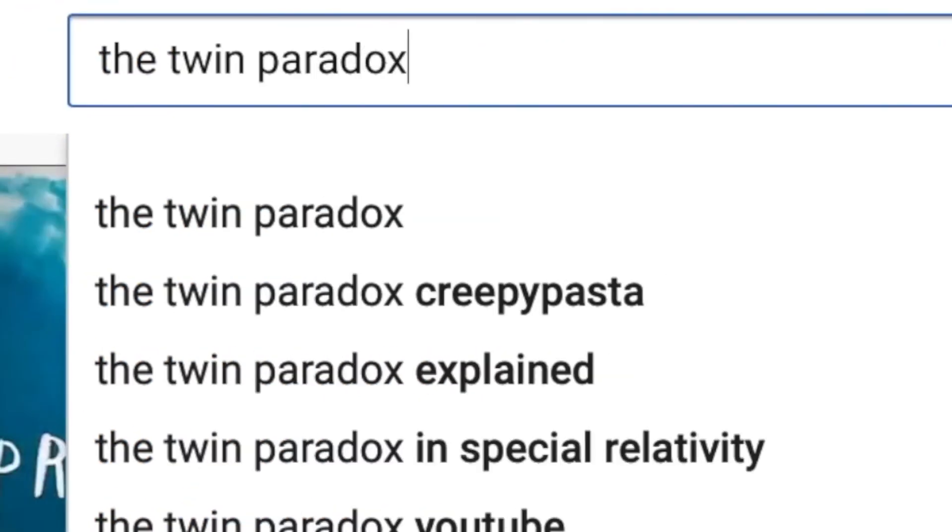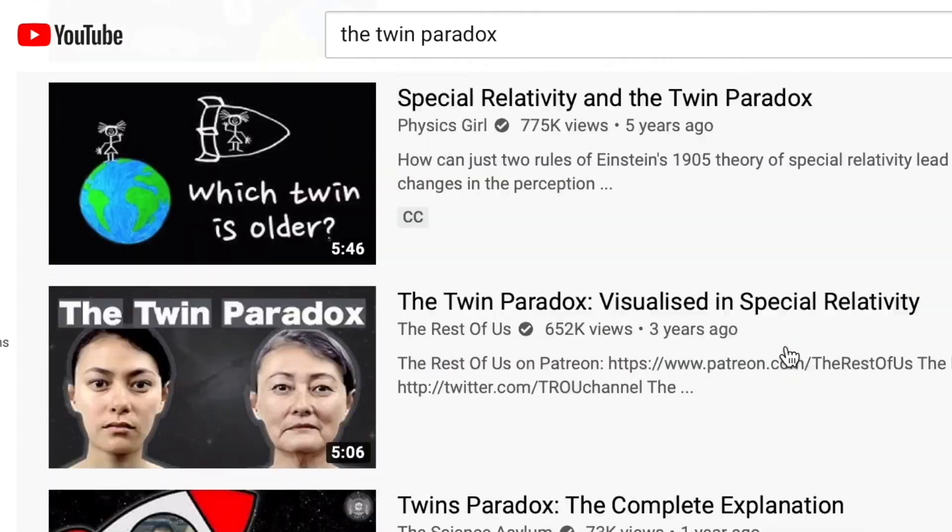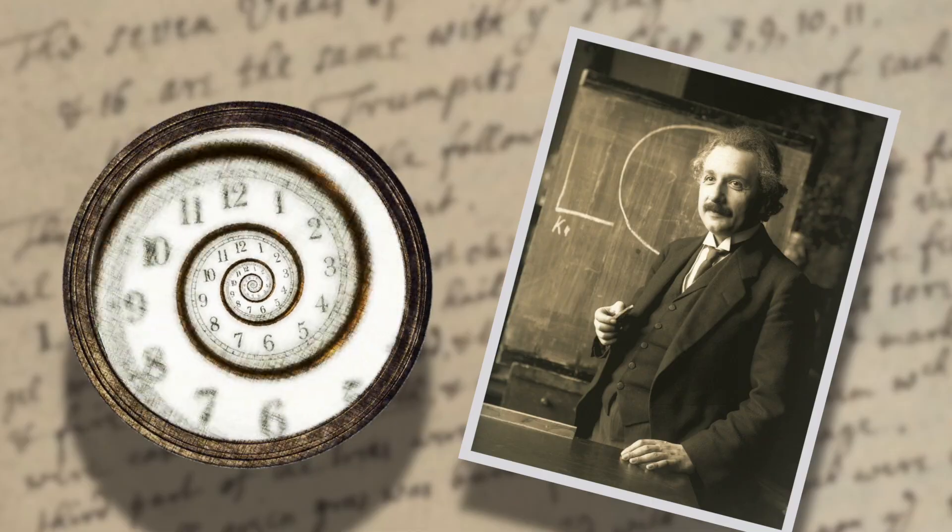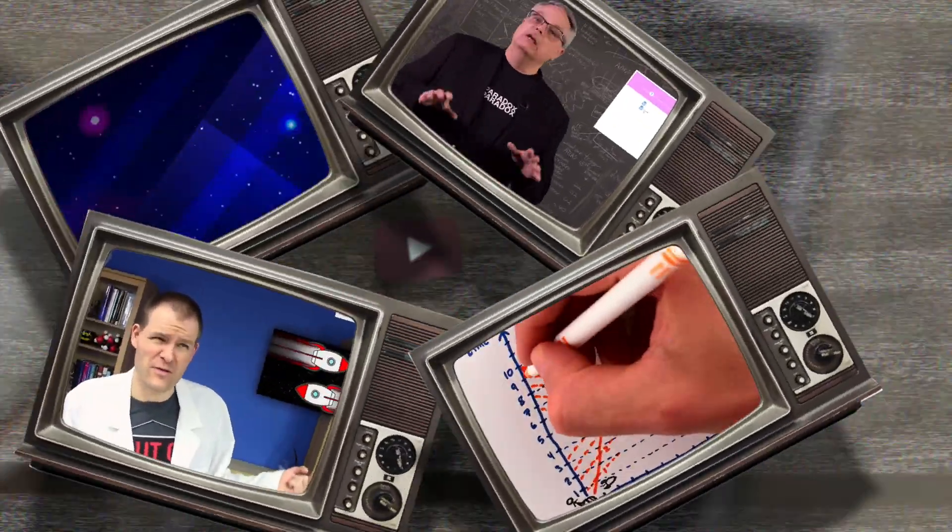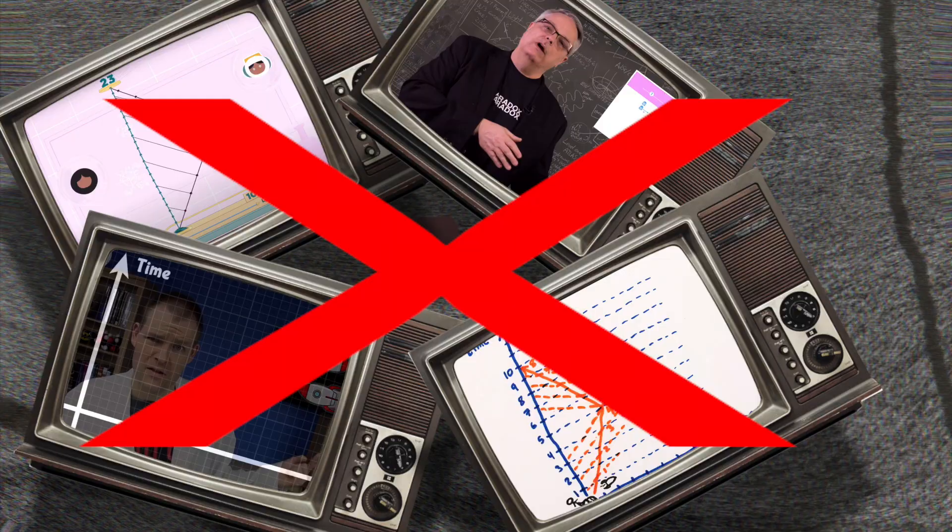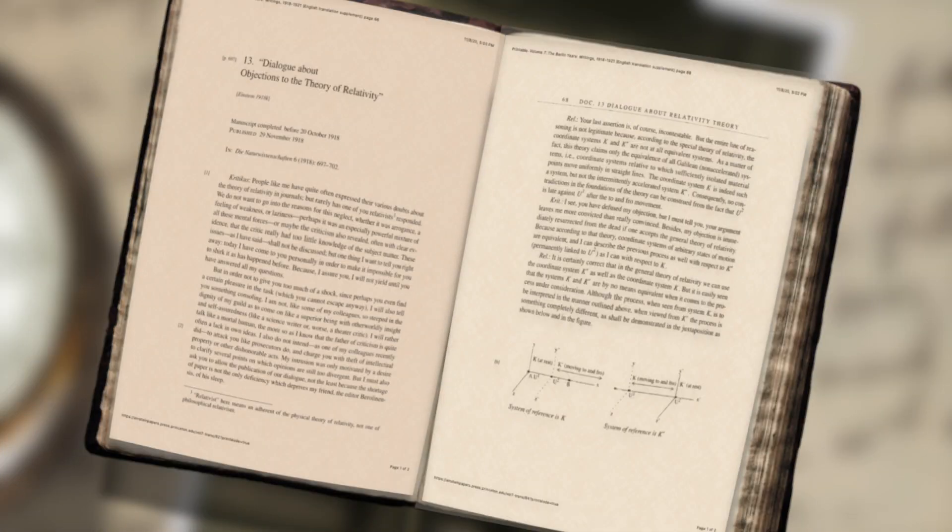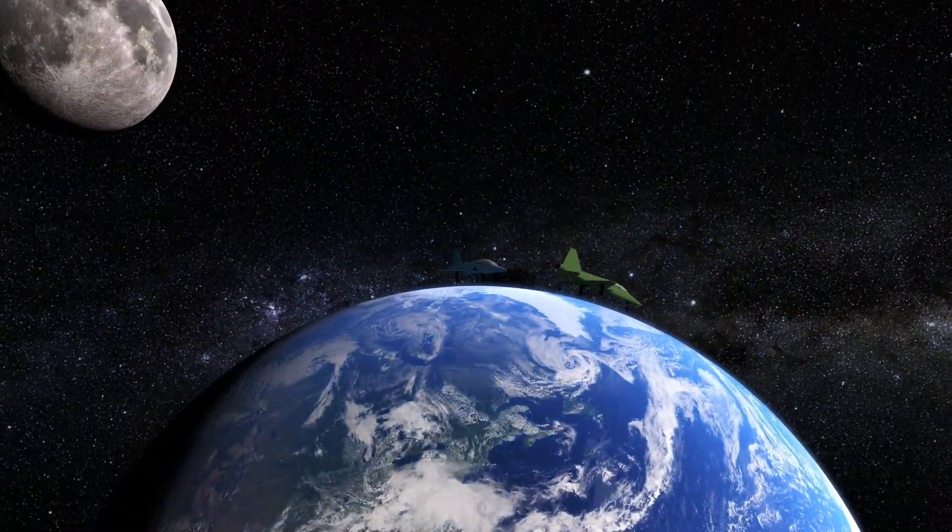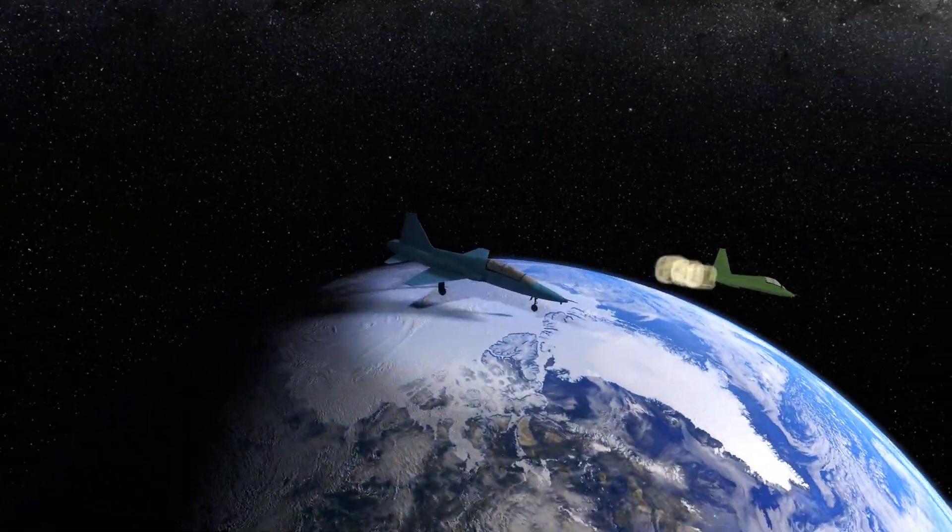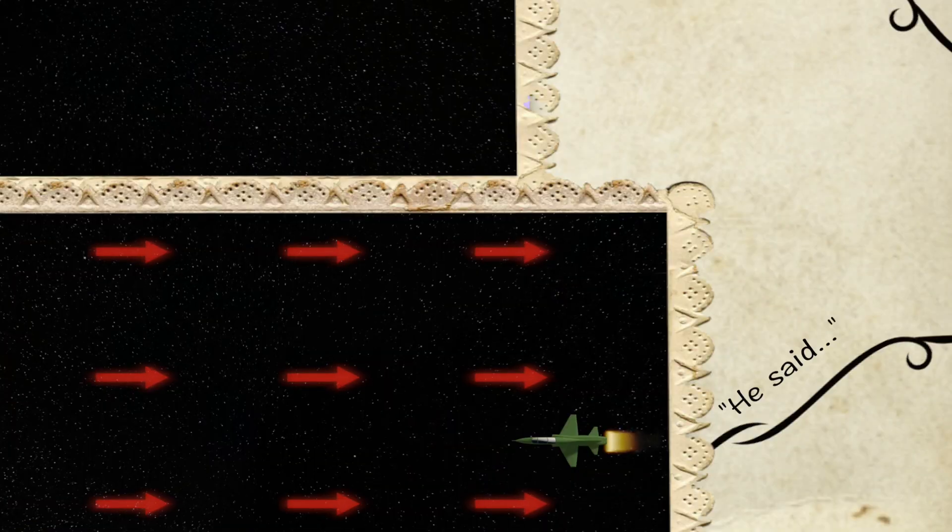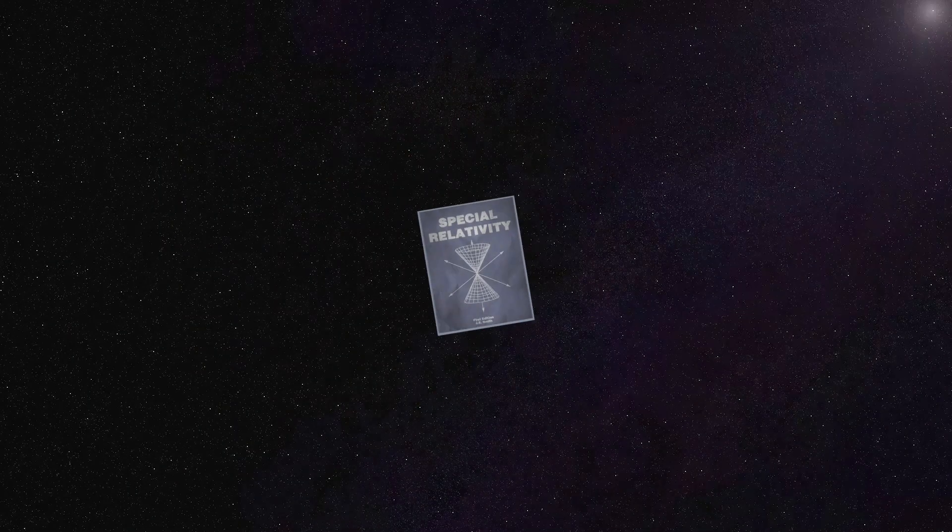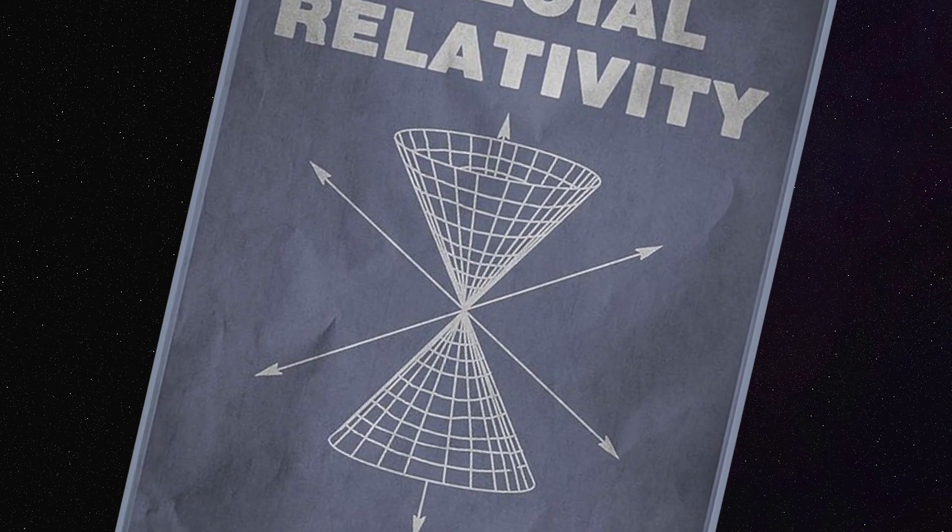Explanations to the twin paradox are as numerous as the various channels on YouTube which purport to have them. But what most people don't know is that in the eyes of the inventor of relativity himself, almost all of these explanations are insufficient. According to Einstein, there is only one solution that provides a completely consistent answer to the mystery. But what exactly is that solution, and how conclusive is it really? And does it actually require us to leave the framework of special relativity where the paradox was formulated?